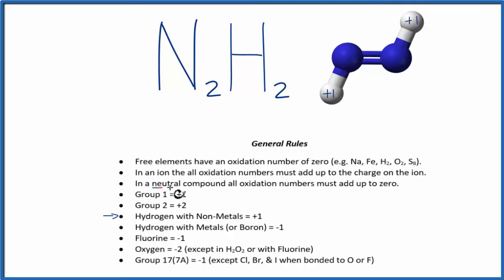We also know in a neutral compound, we say this is neutral because there's no plus or minus here, all the oxidation numbers have to add up to zero. So we could say plus one and plus one, that's plus two.